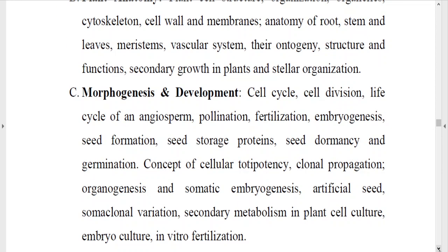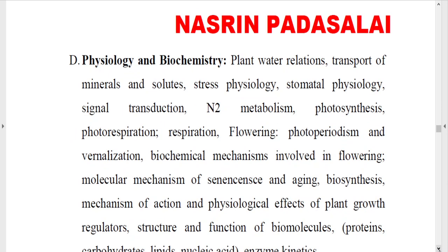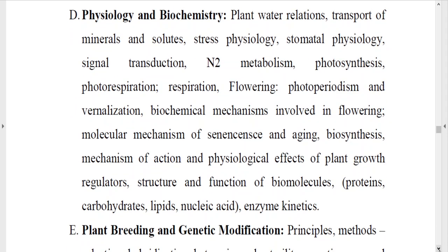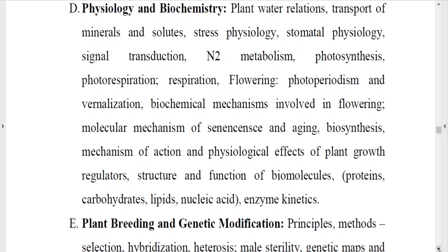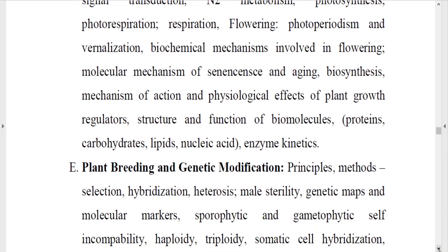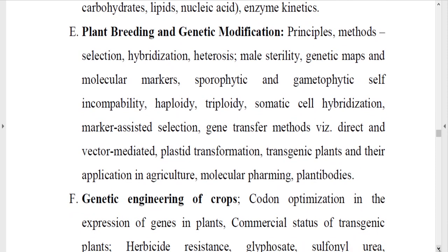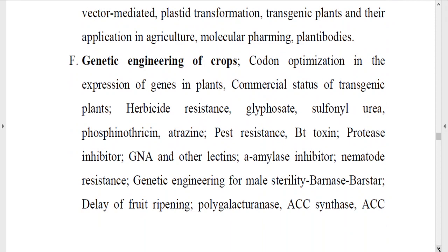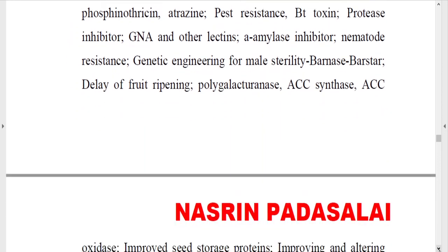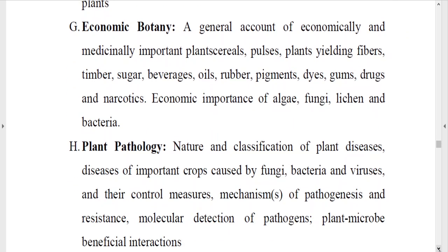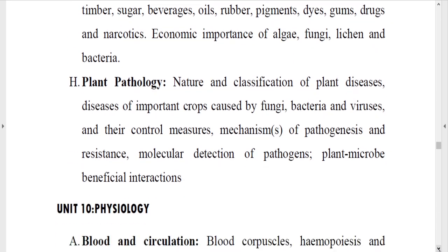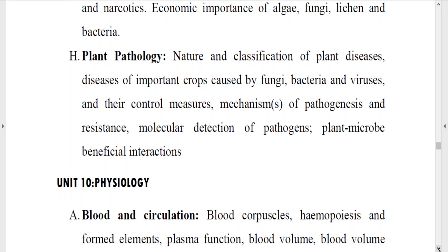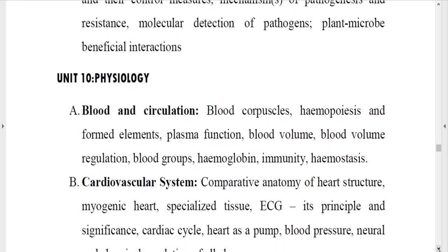Botany is again an important topic. You need to know about plant systematics, plant anatomy, and morphogenesis and development — including organogenesis, embryogenesis, and seed germination. Also cover plant physiology and biochemistry: stomatal physiology, signal transduction, types of phytohormones involved, flowering mechanisms, and plant senescence. Know about secondary metabolites, plant breeding and genetic modification techniques, and genetically engineered crops. Finally, cover economic botany — economically and medicinally important plants and their metabolites — and plant pathology including the list of diseases affecting plants.